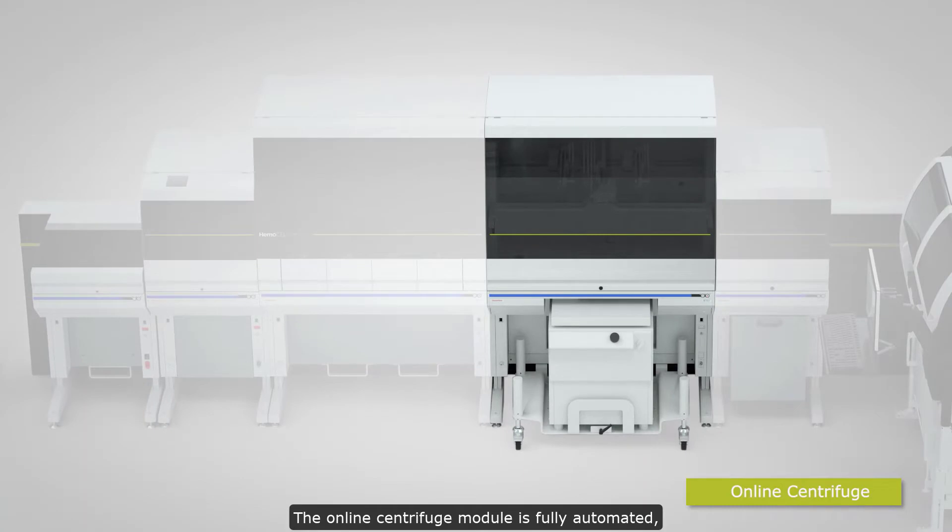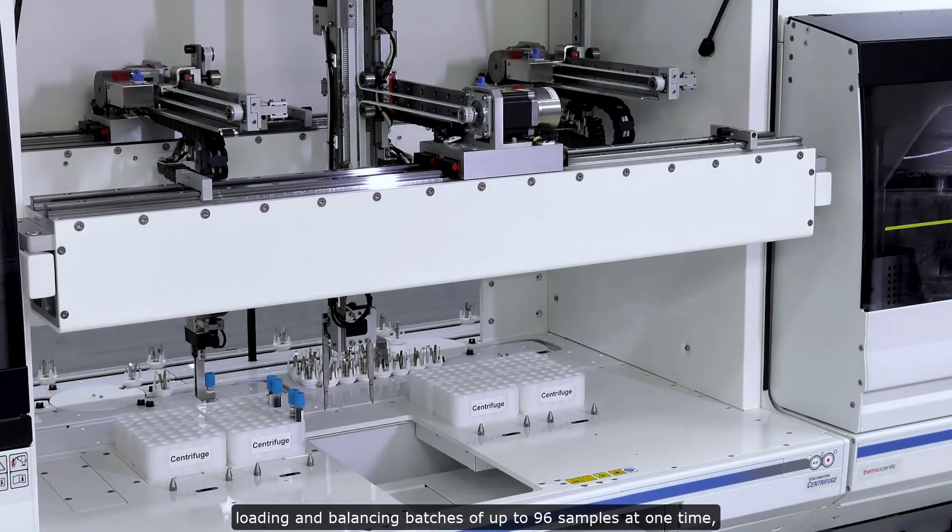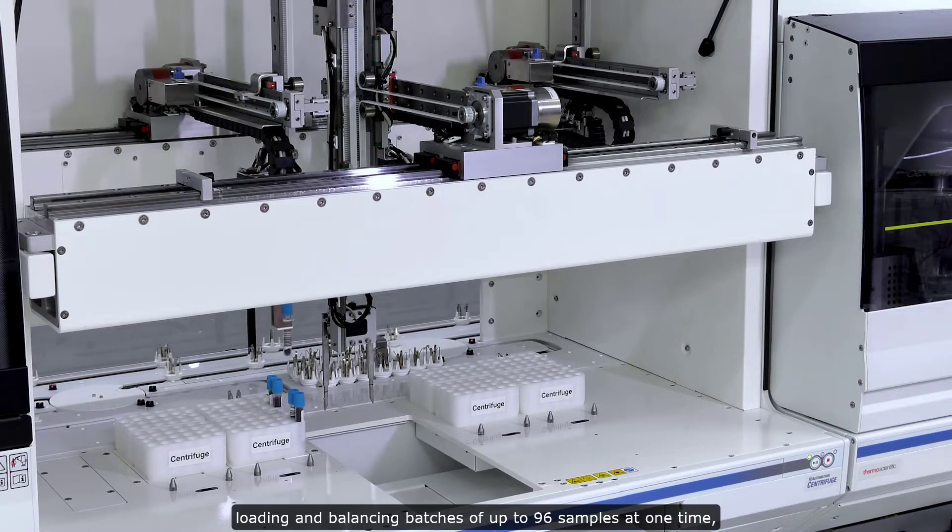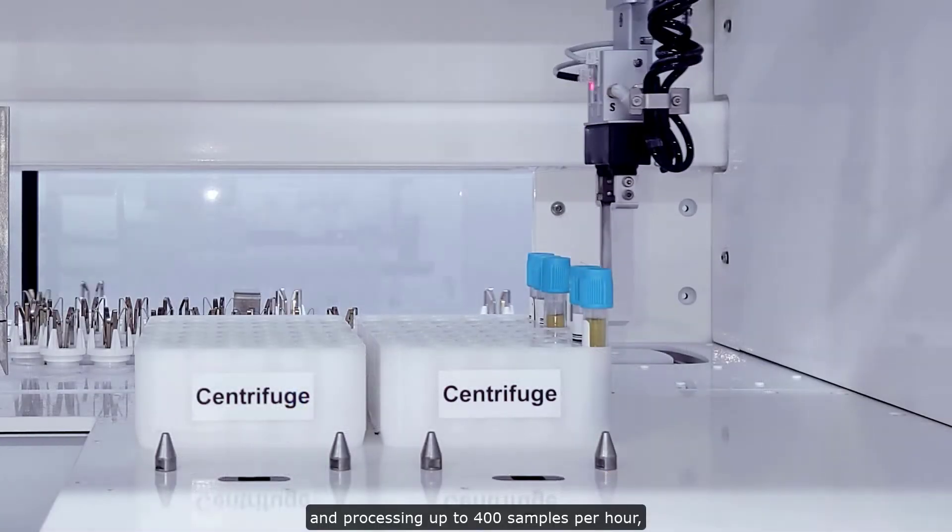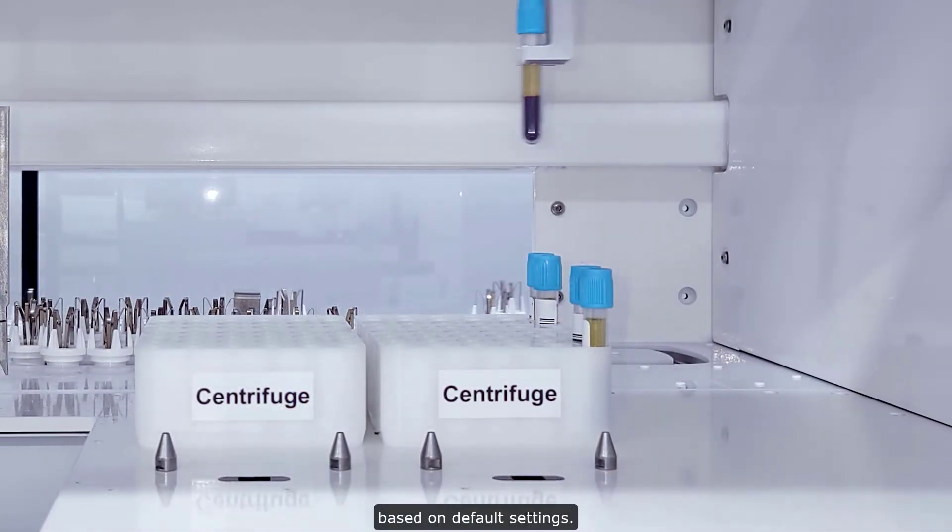The online centrifuge module is fully automated, loading and balancing batches of up to 96 samples at one time, and processing up to 400 samples per hour based on default settings.